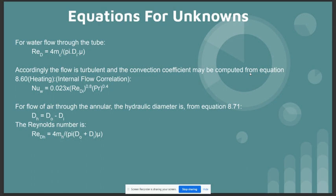These are the equations for unknowns that we have used. First, for the water flow through the pipe, Re is equal to 4m divided by pi times di times mu. Accordingly, the flow is turbulent, and the convection coefficient may be computed from equation 8.6, where Nu is equal to 0.023 times Re raised to 0.8 times Pr raised to 0.4. The flow of air through the annulus, the hydraulic diameter from equation 8.71 is dh is equal to d0 minus di. The Reynolds number is Re equals 4m divided by pi times d0 plus di times mu.